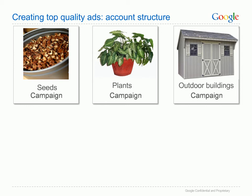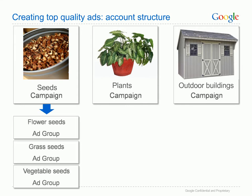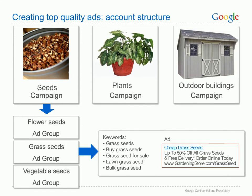Within each campaign, you could have a separate ad group for each product area. For example, in the seeds campaign, you could have a flower seeds ad group, a grass seeds ad group and a vegetable seeds ad group. Each of these ad groups will have very specific keywords and ads. So when a user searches for grass seeds, they'll see an ad which is directly related to their search, and when they click on the ad, they'll be directly taken to the page of the site about grass seeds. Why not review your website today and decide how to organise your AdWords account so your ads are as specific and relevant as possible?